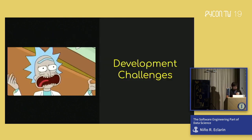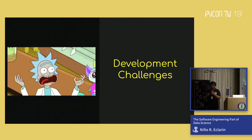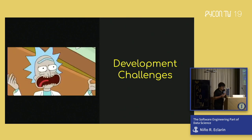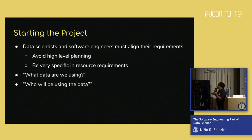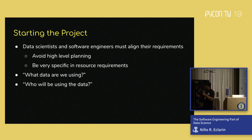Now I've given you a brief introduction and we're moving on to the development challenges. Starting the project: first and foremost, the data scientists must always align with the software engineers in terms of requirements. And this might go counter-intuitively, but never go on high-level planning when discussing with the data scientists. The main reason is that you want the specifications between the software engineer and the data scientists to be as granular and specific as possible.